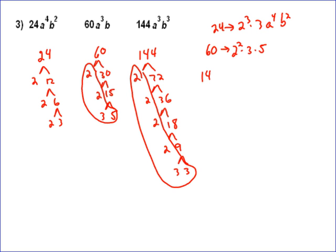And then again, on these two, we need to include the variables. So the 60 was a cubed b, the 144 is a cubed b cubed.